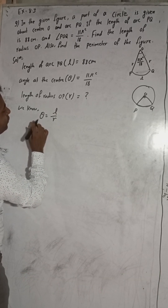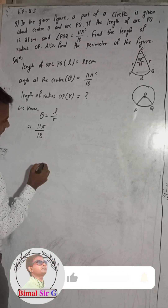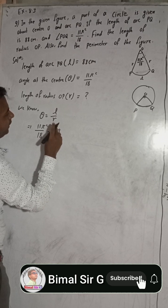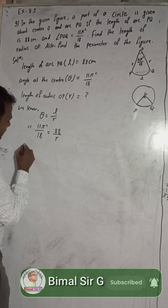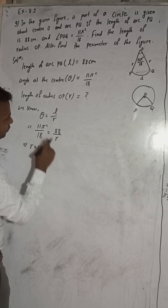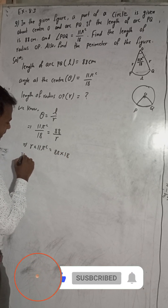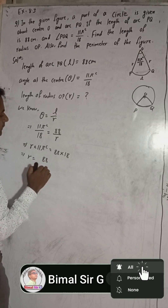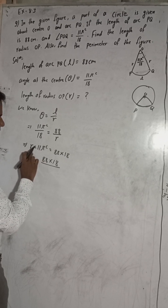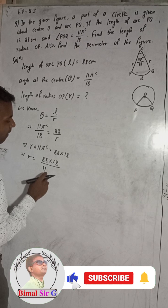So here theta is equal to 11π/18 radians, and L is 88, so we have: 11π/18 = 88/R. Cross-multiplying, R × 11π = 88 × 18. This implies R is equal to 88 × 18 divided by 11π. Now we substitute π = 22/7 to find the value.